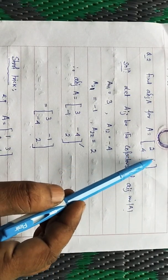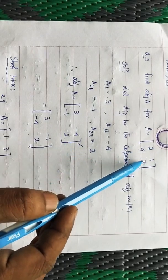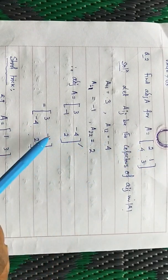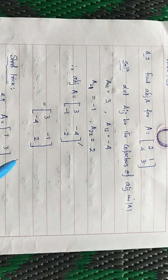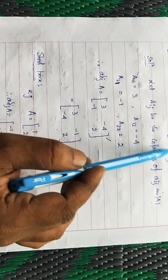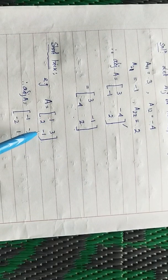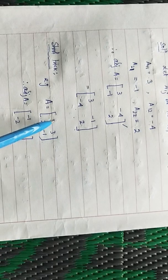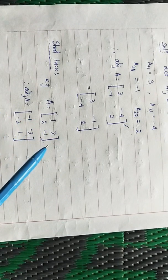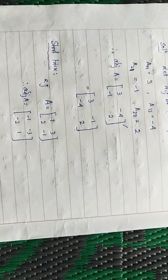From this 2×2 example, notice something interesting: the diagonal elements in the adjoint are interchanged compared to the original matrix, and the off-diagonal elements get their signs changed. So for a 2×2 matrix, the short trick is: swap the diagonal elements and put negative signs on the two off-diagonal elements. For example, if the matrix is [[a, b], [c, d]], the adjoint is [[d, −b], [−c, a]]. In this way you can quickly find the adjoint of any 2×2 matrix.